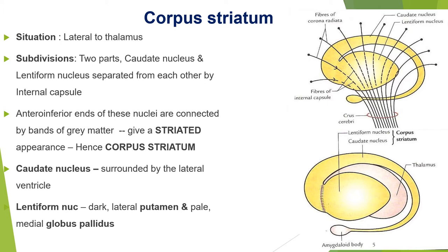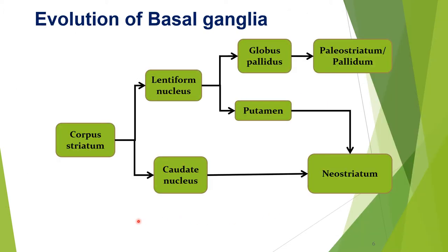The caudate nucleus is surrounded by the lateral ventricle, and the lentiform nucleus consists of a dark lateral putamen and pale medial globus pallidus. Regarding evolution of basal ganglia, the globus pallidus is the oldest part and is known as paleostriatum or pallidum. The putamen and caudate nucleus have evolved more recently and hence are known as neostriatum.